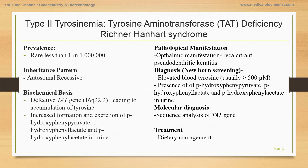Type 2 tyrosinemia differs from type 1 in that there is only elevated tyrosine, whereas in type 1 there are additional elevated amino acids such as methionine. Molecular analysis is the confirmatory diagnosis where sequence analysis of tyrosine aminotransferase is performed. Management is dietary; there is no specific treatment.